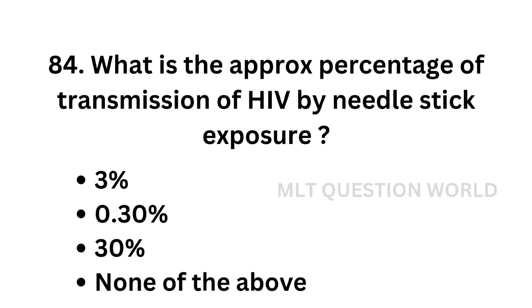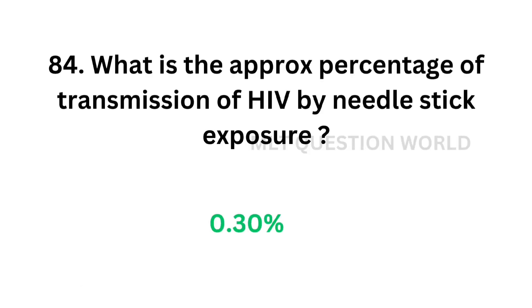Question number 84. What is the approximate percentage of transmission of HIV by needlestick exposure? Option A: 3%. Option B: 0.30%. Option C: 30%. Option D: None of the above. The correct answer is 0.30%. The percentage of transmission of HIV by needlestick injury is less than 1%, that is 0.30%.